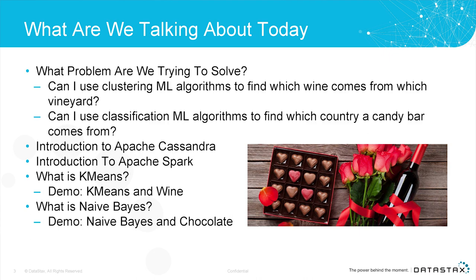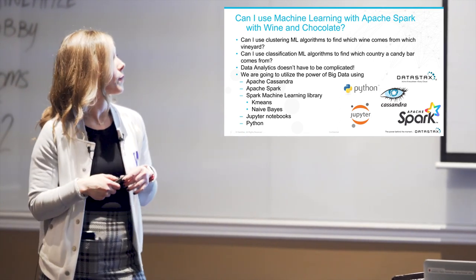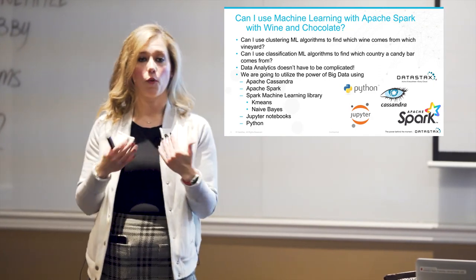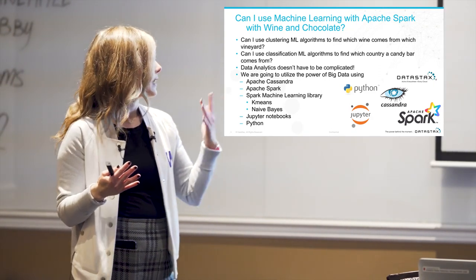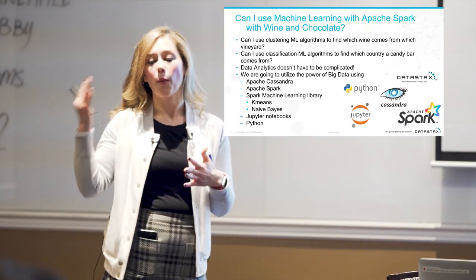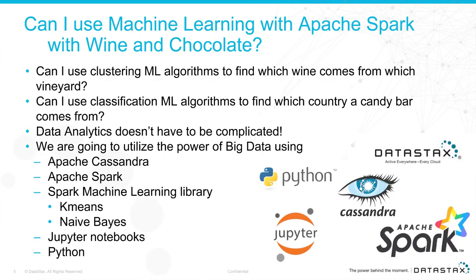Yes, you can use machine learning with Apache Spark on wine and chocolate. But the main goal I'm trying to convey is that data analytics doesn't have to be complicated. If you scale it down to something simple, you can learn how to use it and then go off and do your complicated use cases. We'll demonstrate using Apache Cassandra, Apache Spark, Spark MLlib, Jupyter notebooks, and Python.